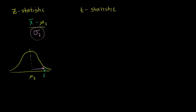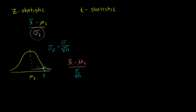The central limit theorem told us that, assuming we have a sufficient sample size, the standard deviation of the sampling distribution is going to be the same as the standard deviation of our population divided by the square root of our sample size. So this expression can be rewritten as our sample mean minus the mean of our sampling distribution, divided by the population standard deviation divided by the square root of our sample size — our best sense of how many standard deviations away from the actual mean we are.